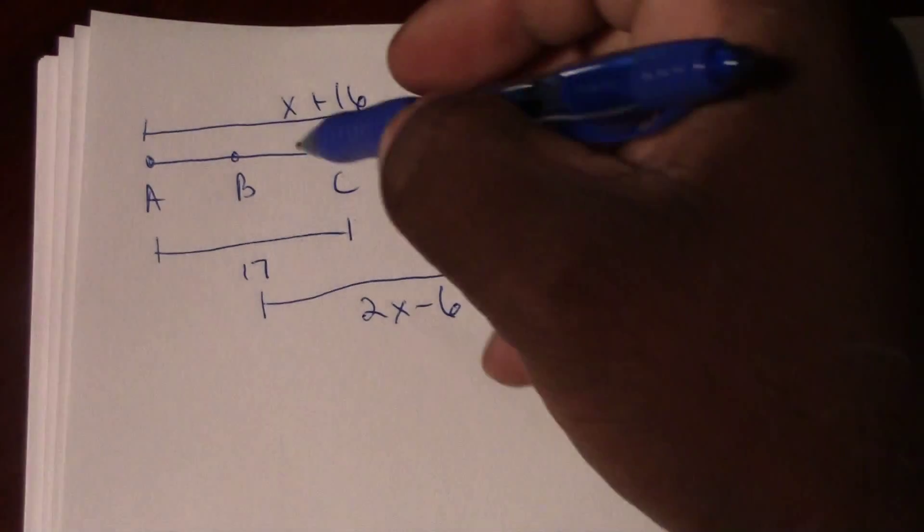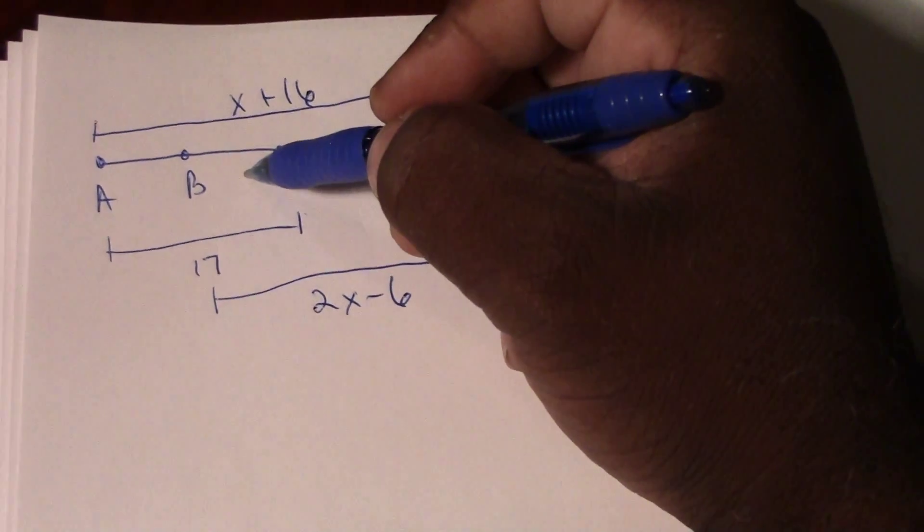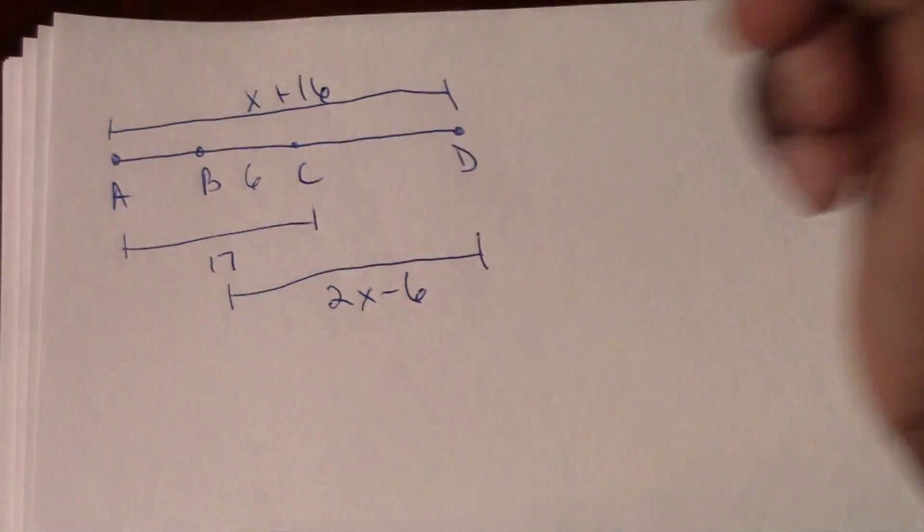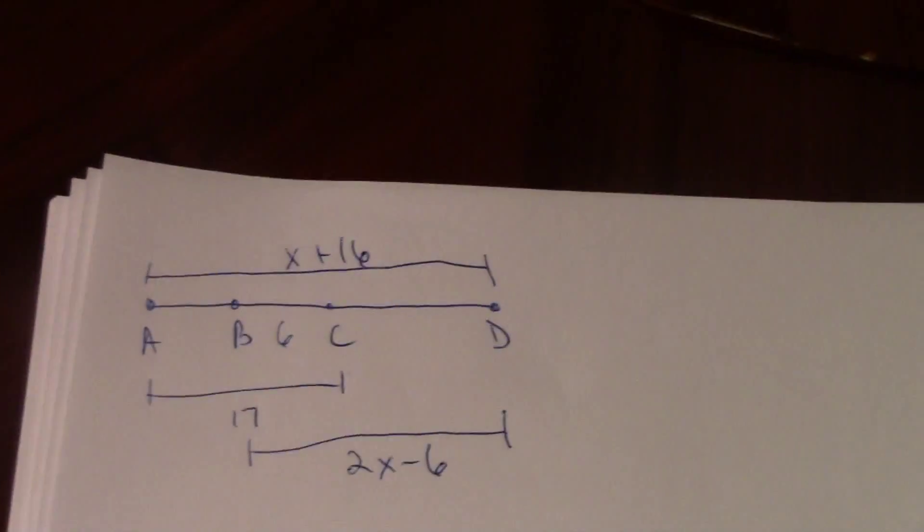And lastly, we're told that BC, which is this little piece here, is going to be 6 units, and we're asked to find X.